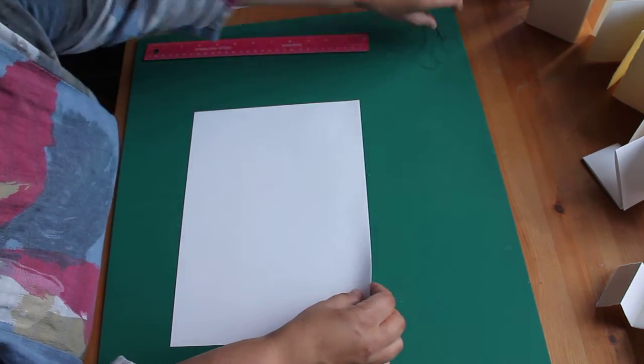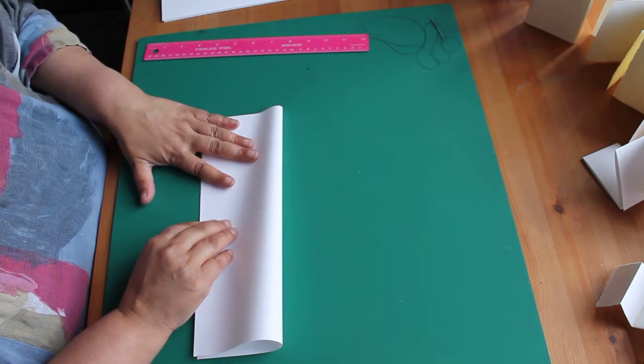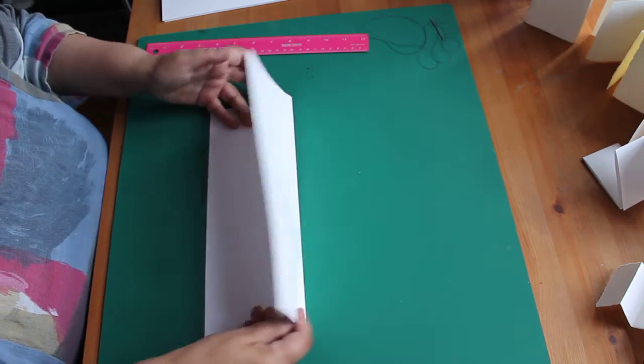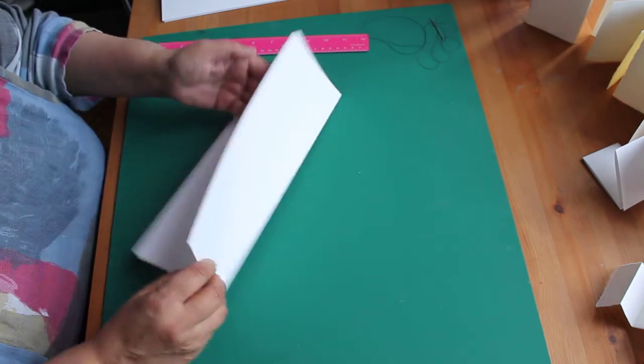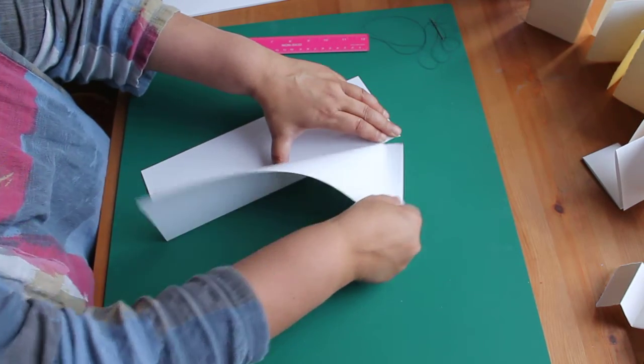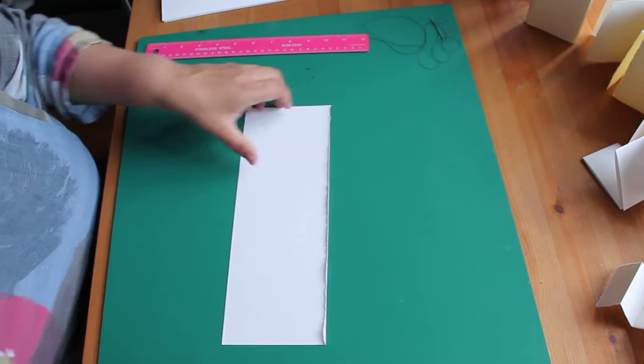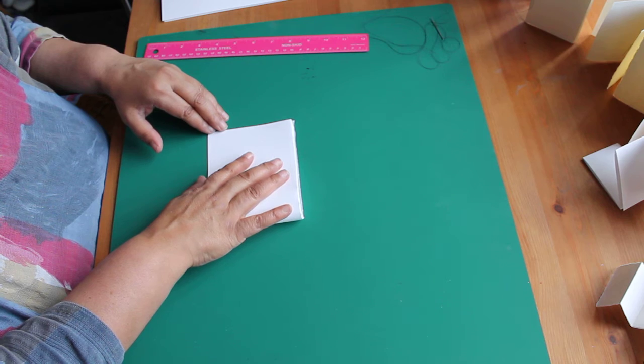So initially, we'll just make a simple concertina form. So you fold this lengthways and tear it. And take that piece, fold it in half, like this.